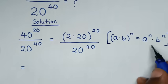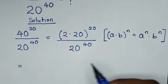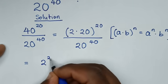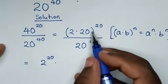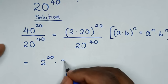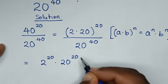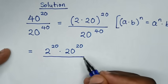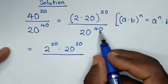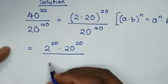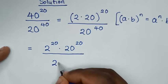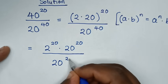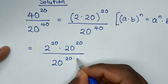So, by applying this form here, it will be 2 power of 20 times 20 power of 20. Then over, in the denominator, 20 power of 40. And 40 is the same as 20 times 2.